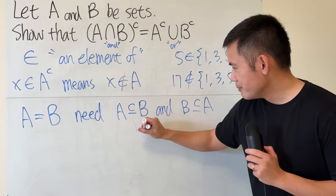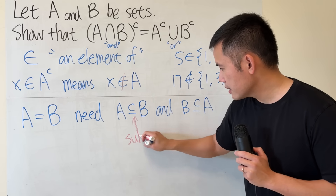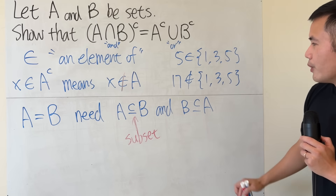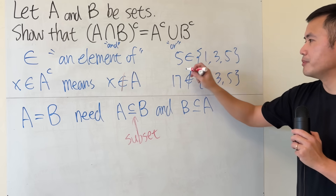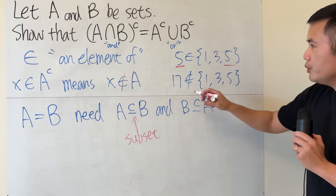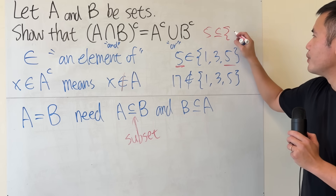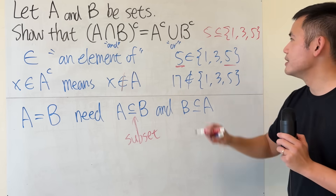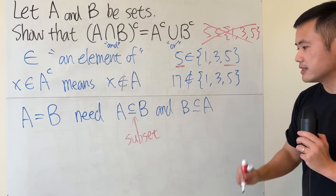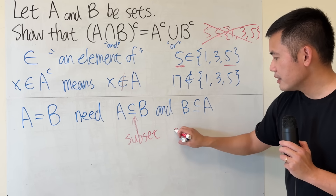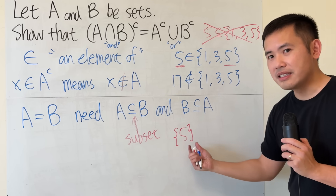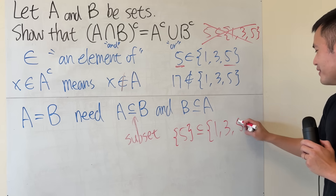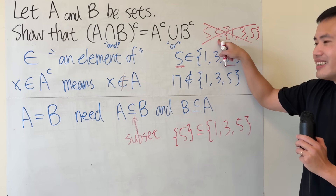So this notation means 'subset of,' which is quite different than that — be really careful. So if you look at {1, 3, 5}, this is the set and 5 is an element because 5 is right here. You cannot say 5 is a subset of {1, 3, 5} — this is the incorrect notation, because 5 is an element, it's not a set. So this is bad. However, what you can say is the following: {5} — a set containing the number 5 — this is a subset of the set {1, 3, 5}. This is OK, that's not OK.